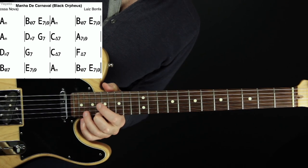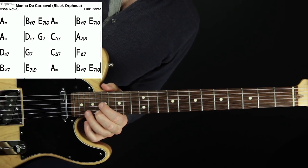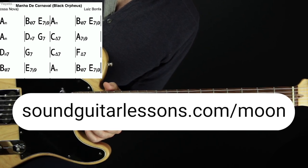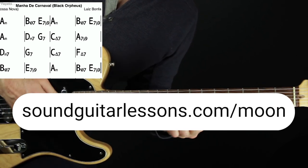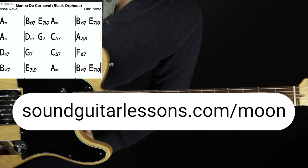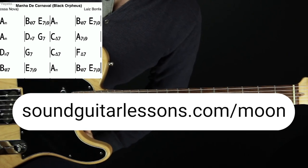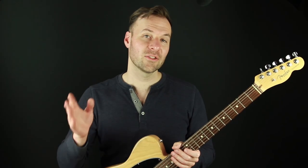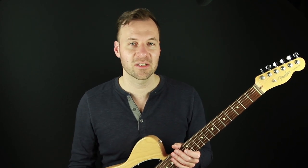There's a link to it in the description or you can go to SoundGuitarLessons.com slash moon to get that. There's tabs and notation and you can study these exact chord shapes and how I arrange this just like we talked about with the tabs and notation in front of you if you like.